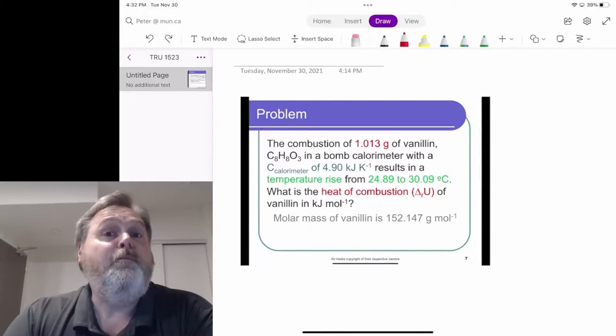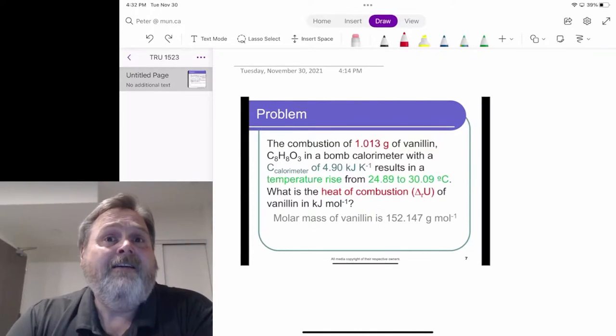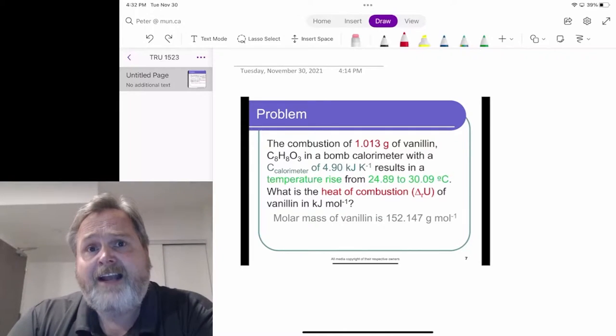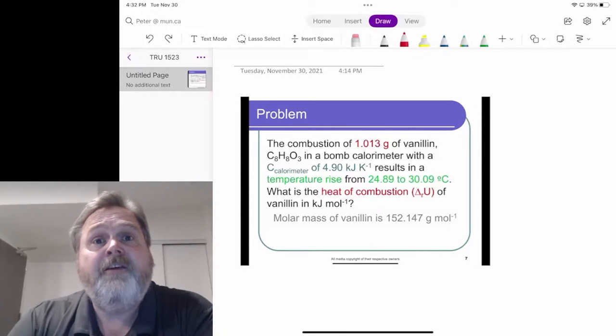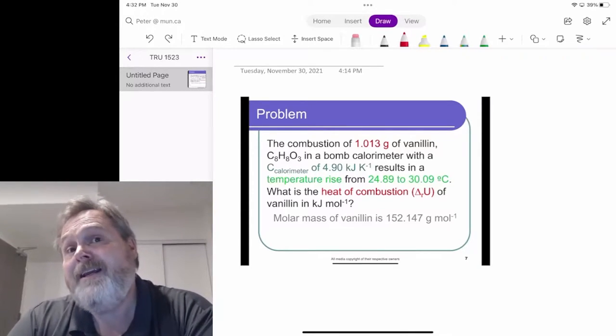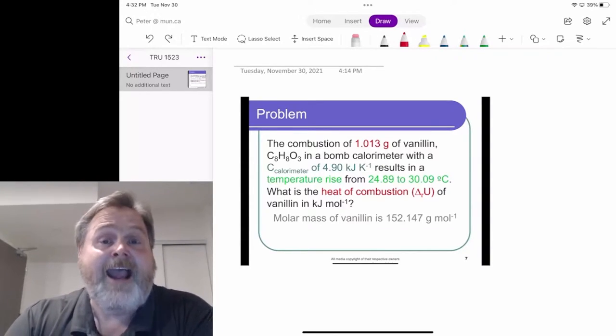This is a question related to bomb calorimetry, which we often use for determining the energy changes involved in a very energetic chemical reaction, usually combustion reactions. In this case, we're looking at the combustion of vanillin, which is essentially one of the flavor components of the vanilla bean and what you would find in artificial vanilla extract.